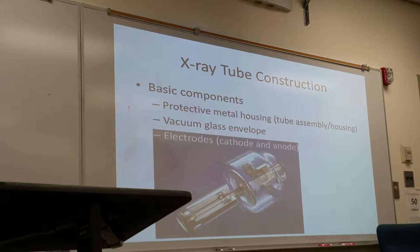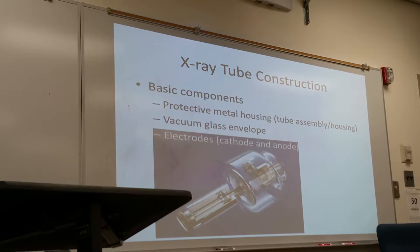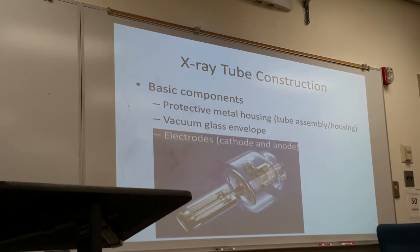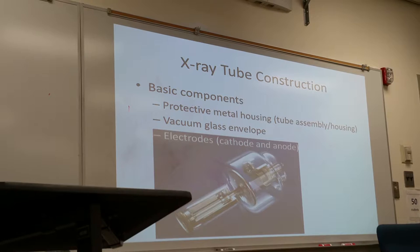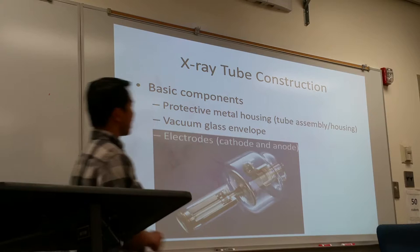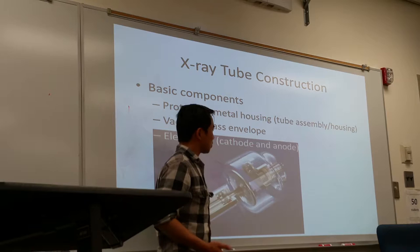Now for tube construction — this is a basic review. The basic components of the tube construction include the housing, where the x-ray tube is placed inside a metal housing, sometimes called tube assembly. Then there is the envelope, which depends on the manufacturer and can be glass or metal. Inside the envelope are the cathode and anode sides, where x-ray production occurs.